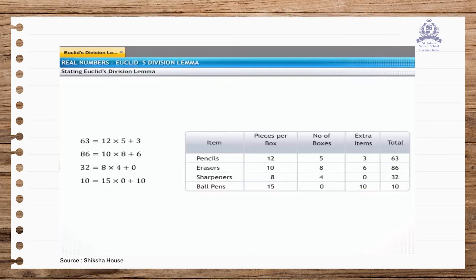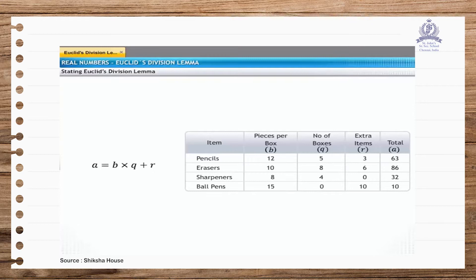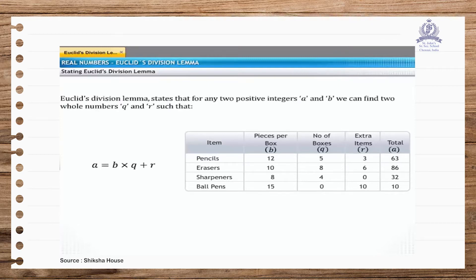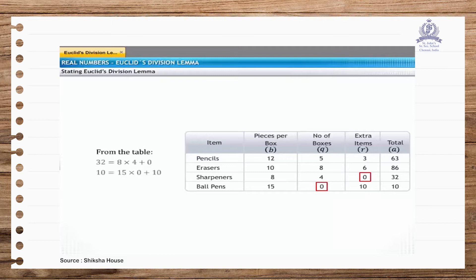Now let us come to the point. If we assign labels to the values in the different columns of the table, they all follow a general relation: the total A equals the pieces per box B, multiplied by the number of boxes Q, plus additional items R. This relation is known as Euclid's division lemma, which states that for any two positive integers A and B, we can find two whole numbers Q and R such that A = BQ + R. From Mr. Chathura's table, you can see that Euclid's division lemma holds true even if either Q or R is 0.